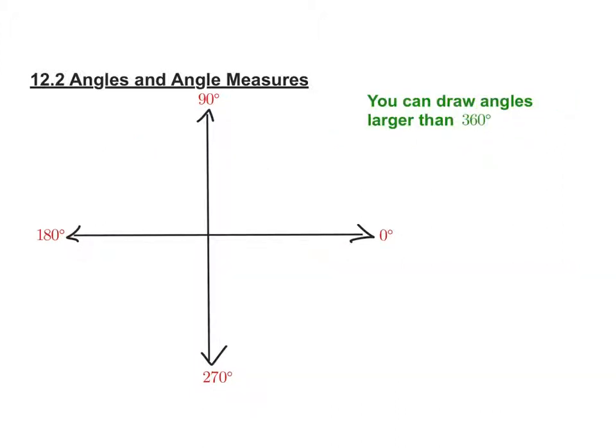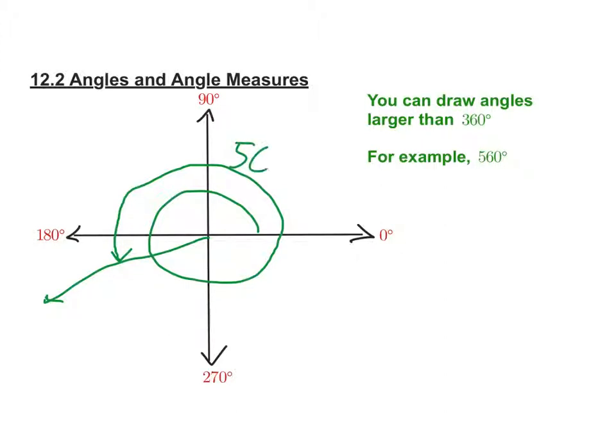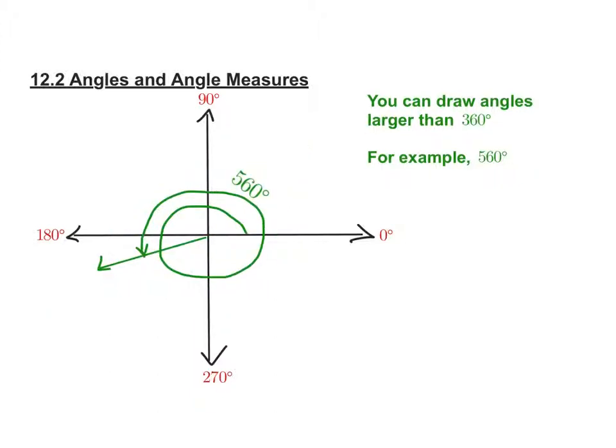So the other thing that we need to know is you can draw angles larger than 360 degrees. In theory, if I start here and go all the way around, that's 360 degrees. So if I just kept going, it would be bigger than 360. So let's look at an example like this, 560. So if I start here and I go around, and I go around one time, that's 360. So I need another how many degrees to get to 560? 200. So if I keep going, there's 180. So how much further do I need to go? 20. Another 20. If I were to draw, this angle would be 560 degrees. So when you draw an angle that's bigger than 360, you just go around again.